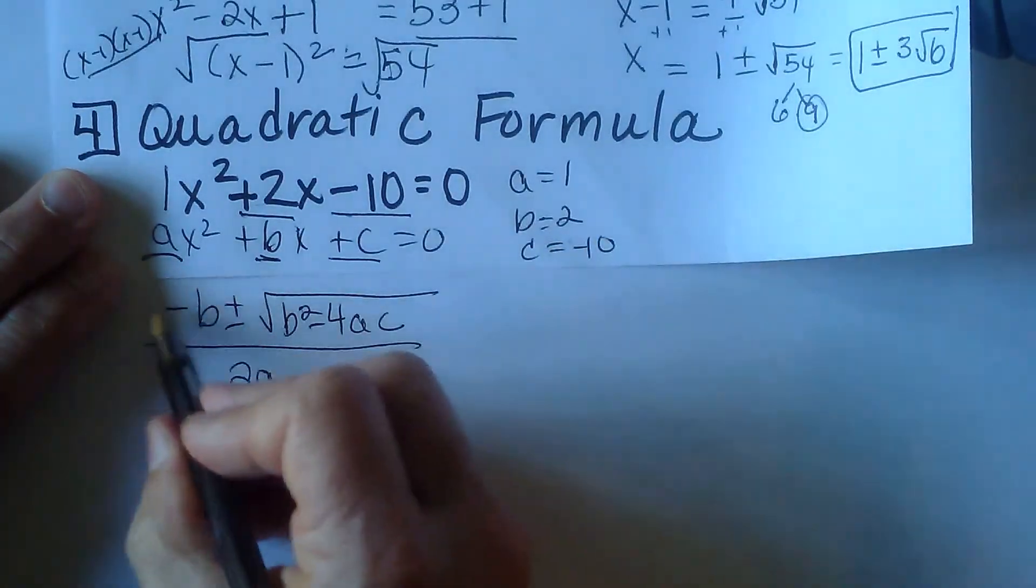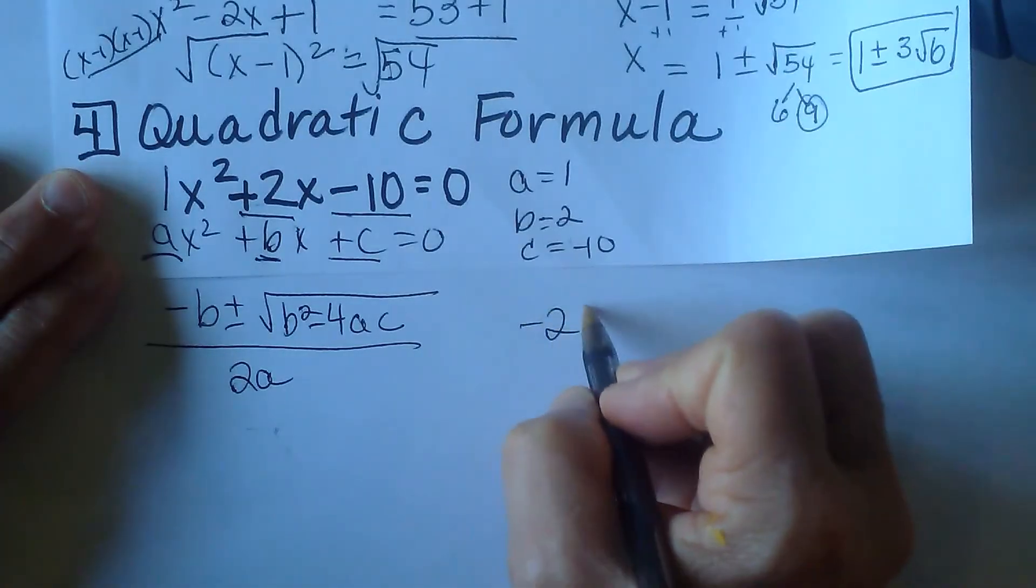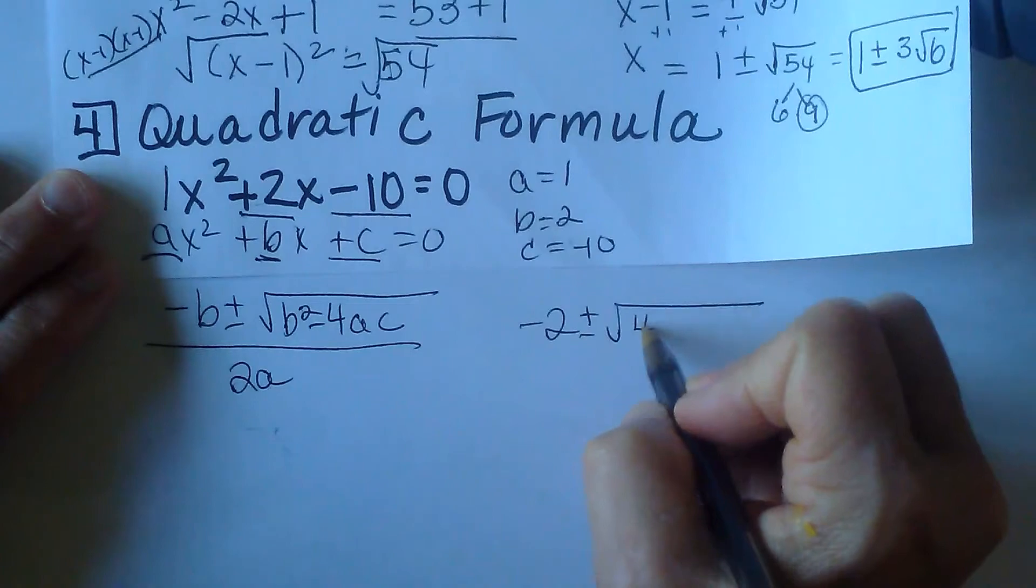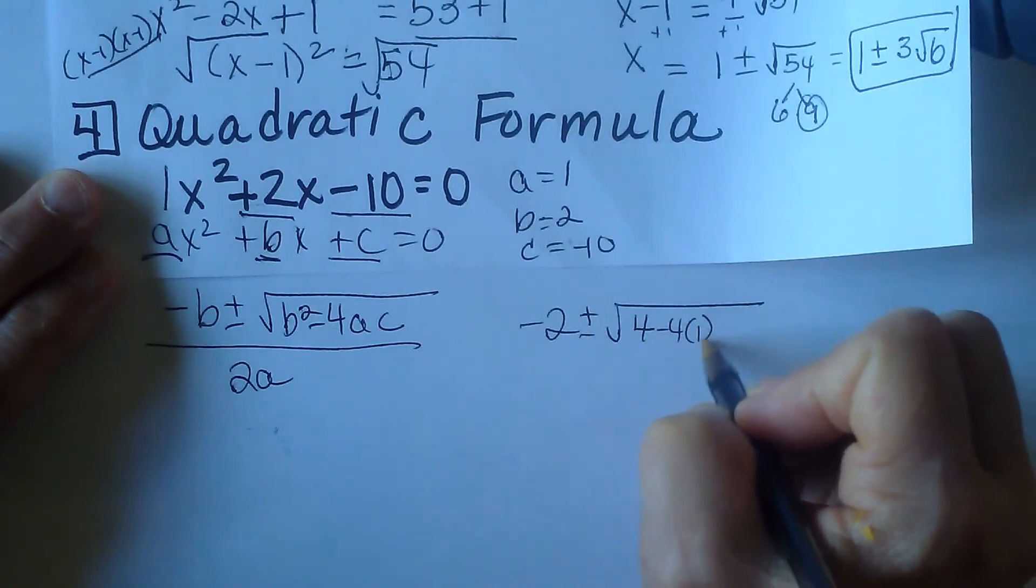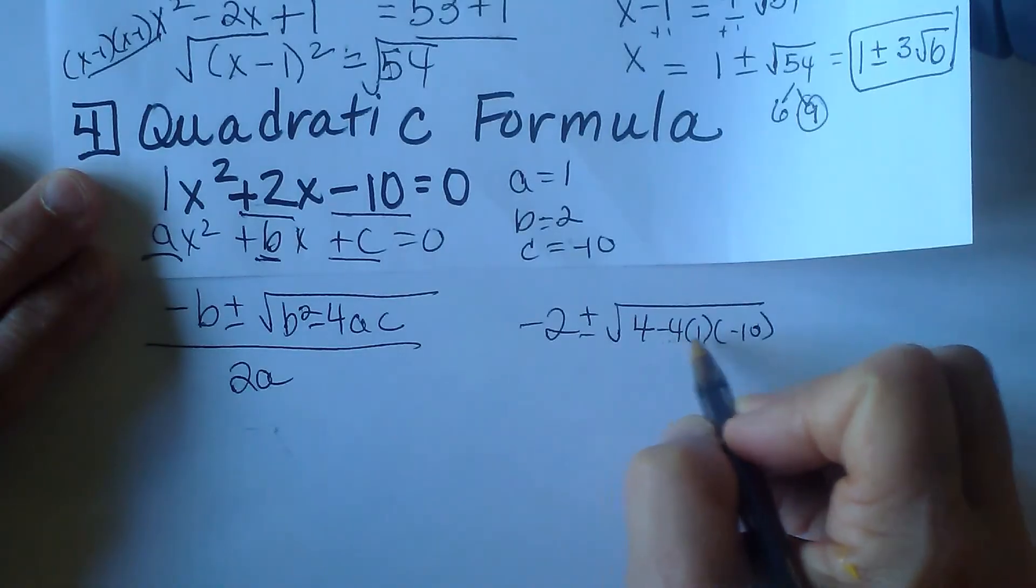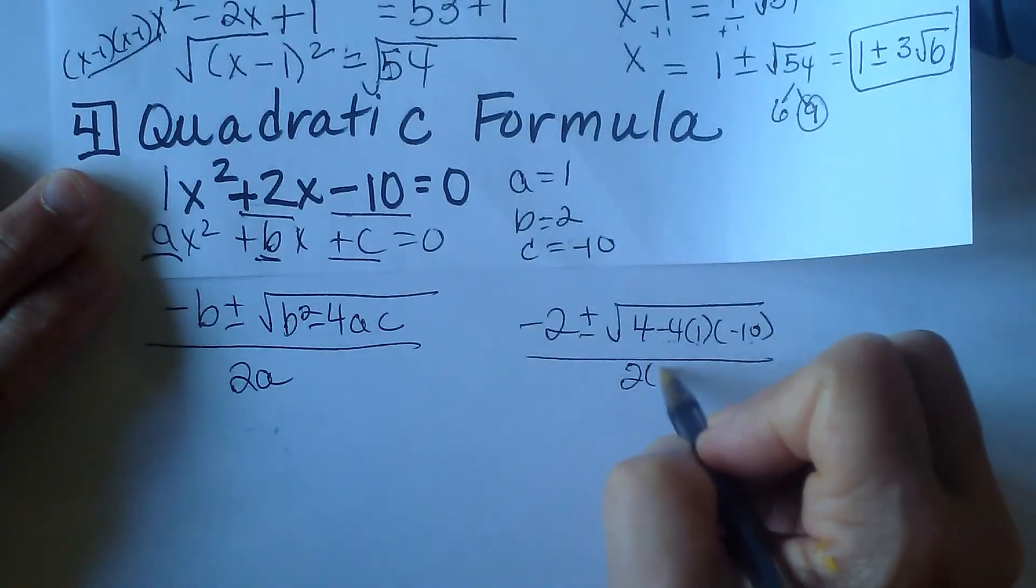Let's plug in the opposite of b. The opposite of positive 2 is negative 2 plus or minus the square root, b squared is 4 minus 4 times a times c. So 4 times, minus 4 times 1 times negative 10 all over 2 times a, which is 2 times 1.